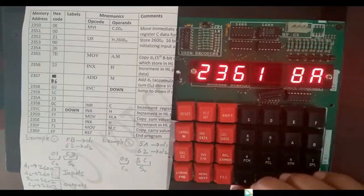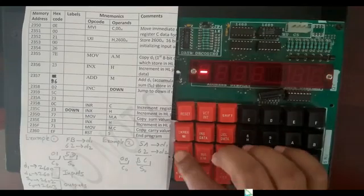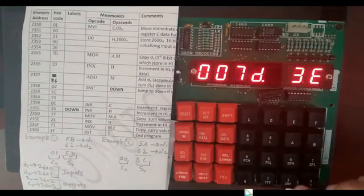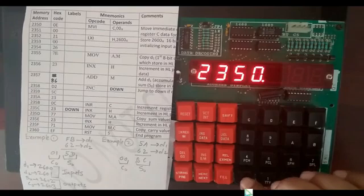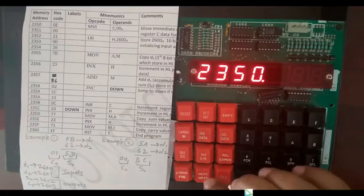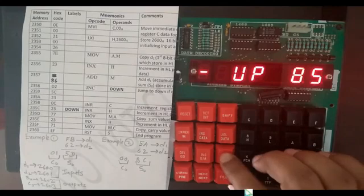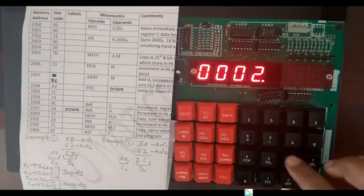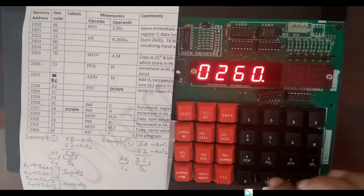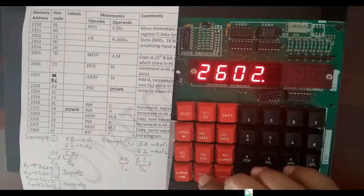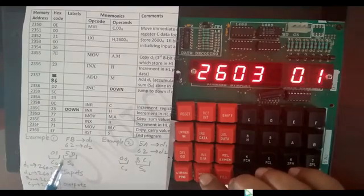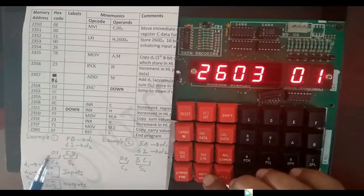Now execute the program — press Go, starting address 2350H, then dot. Now we see the result in memory. Examine memory 2602H, then next. Here is the sum value. Then next — here is the carry value.